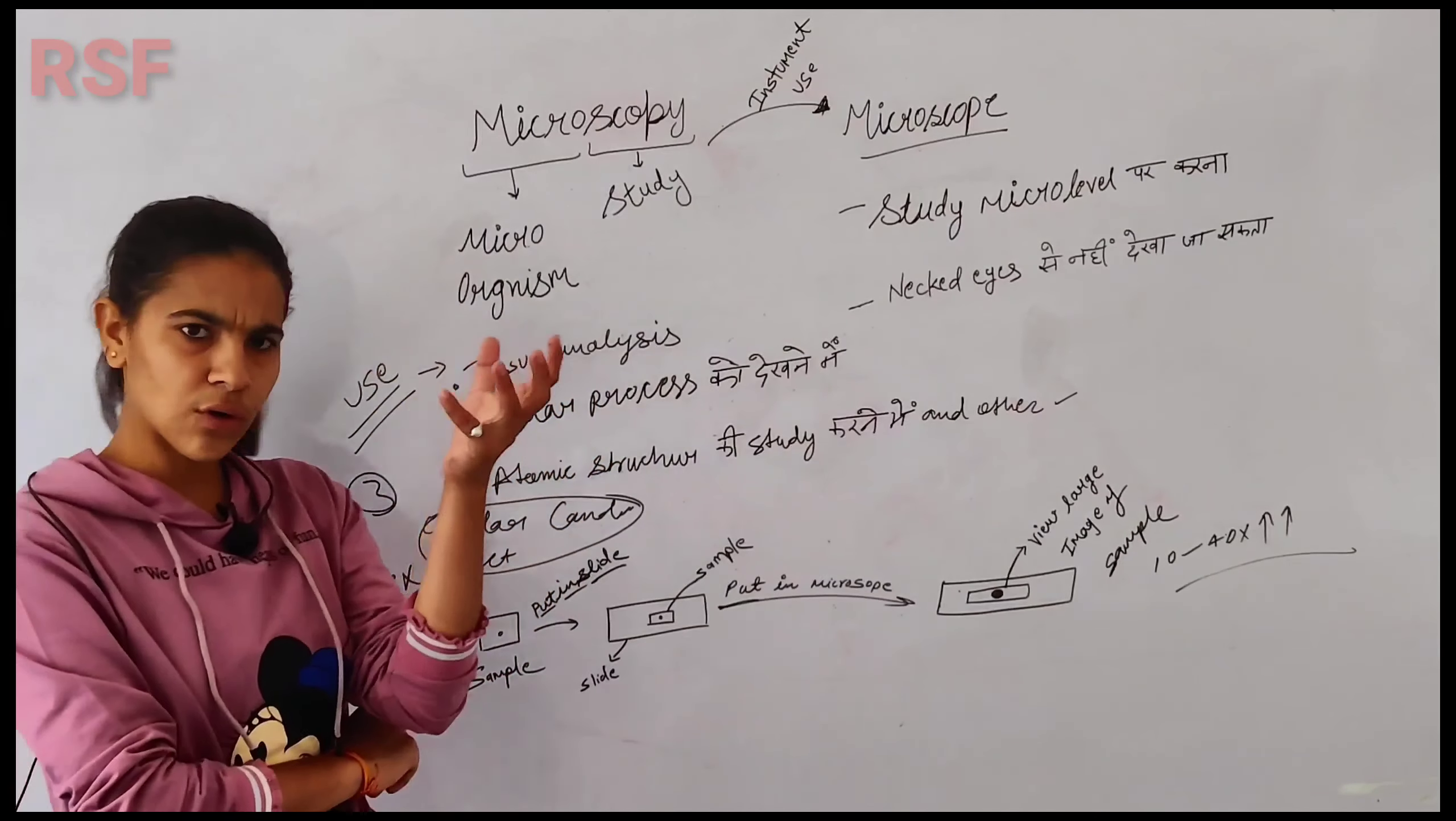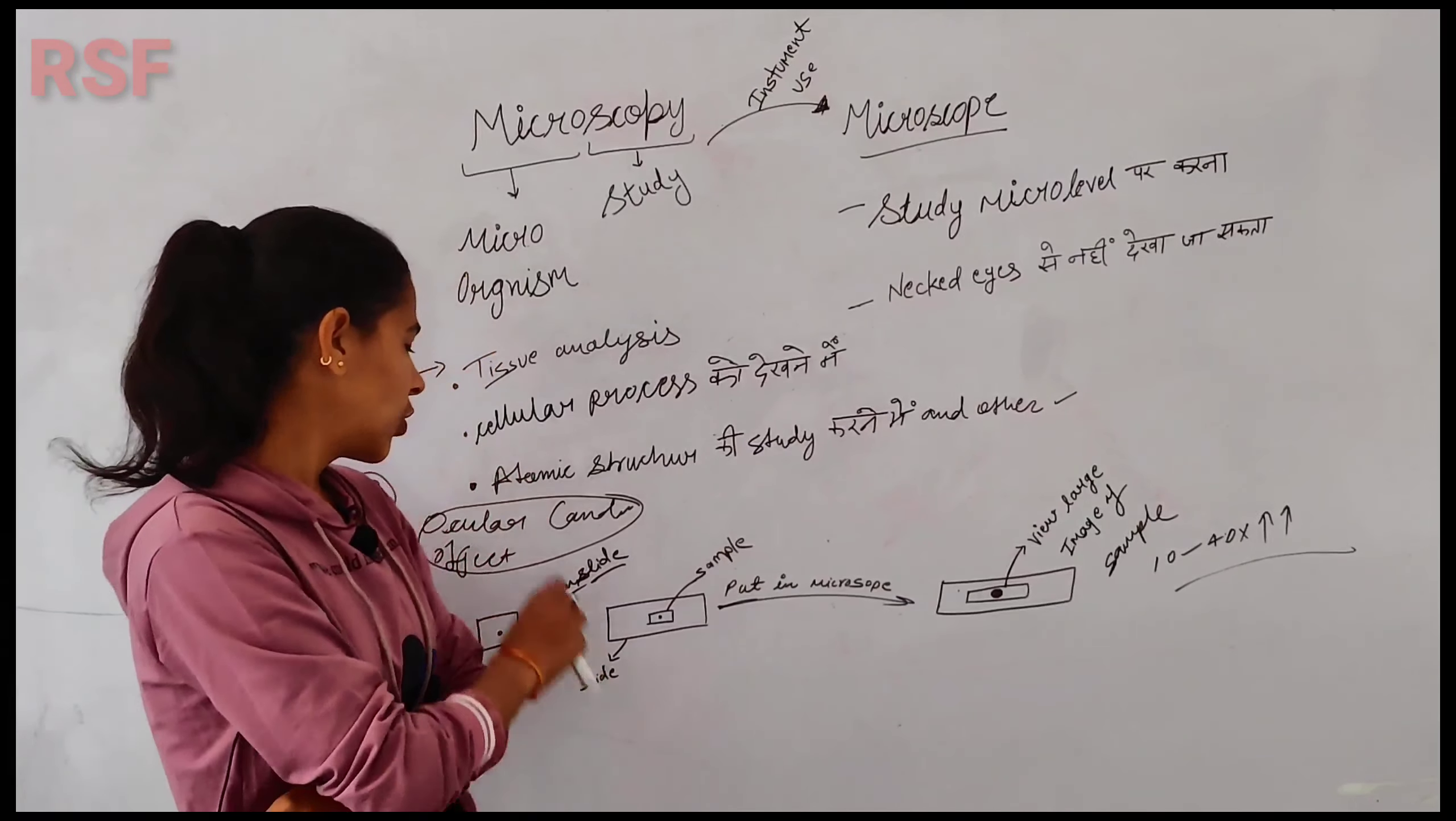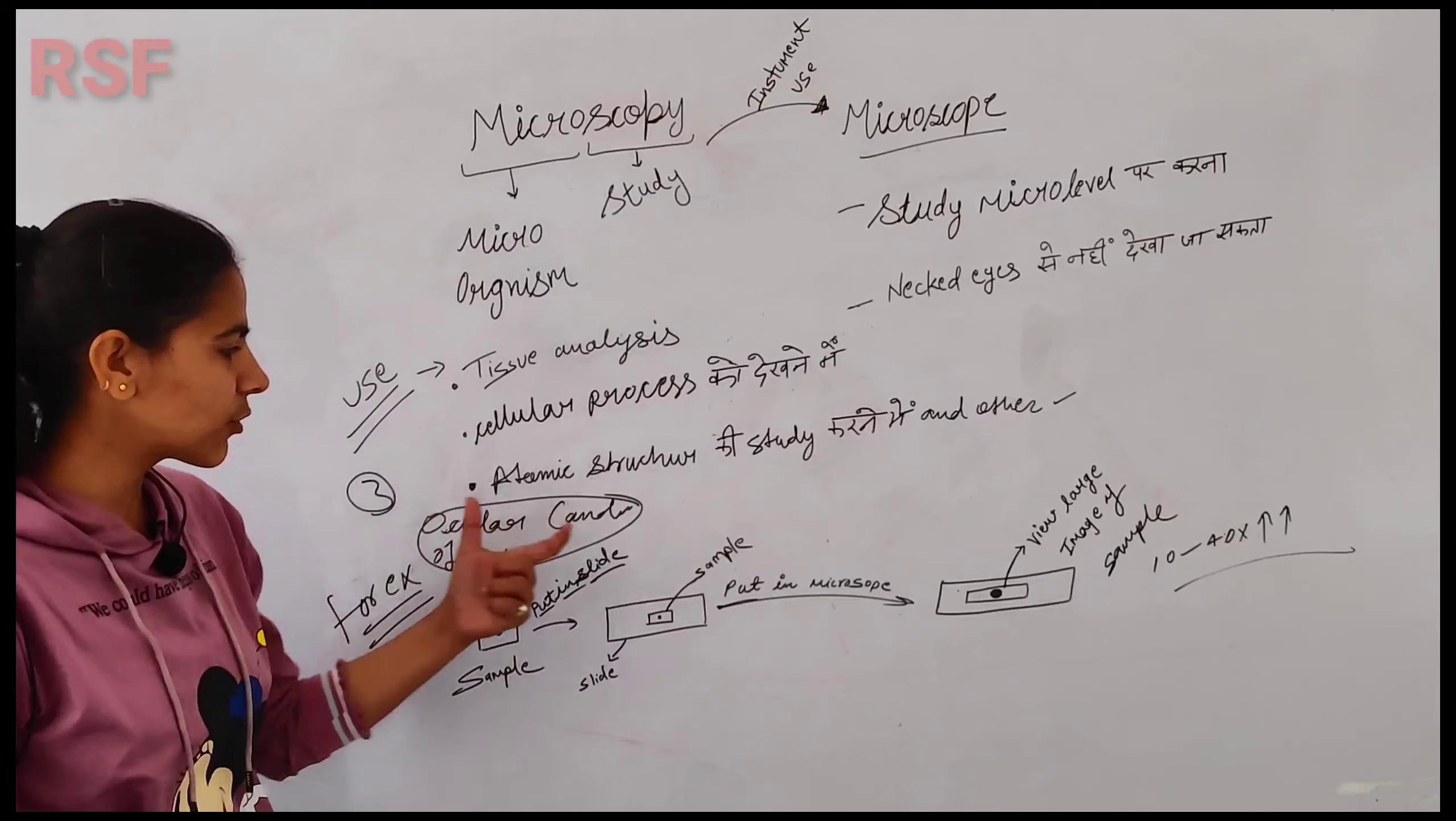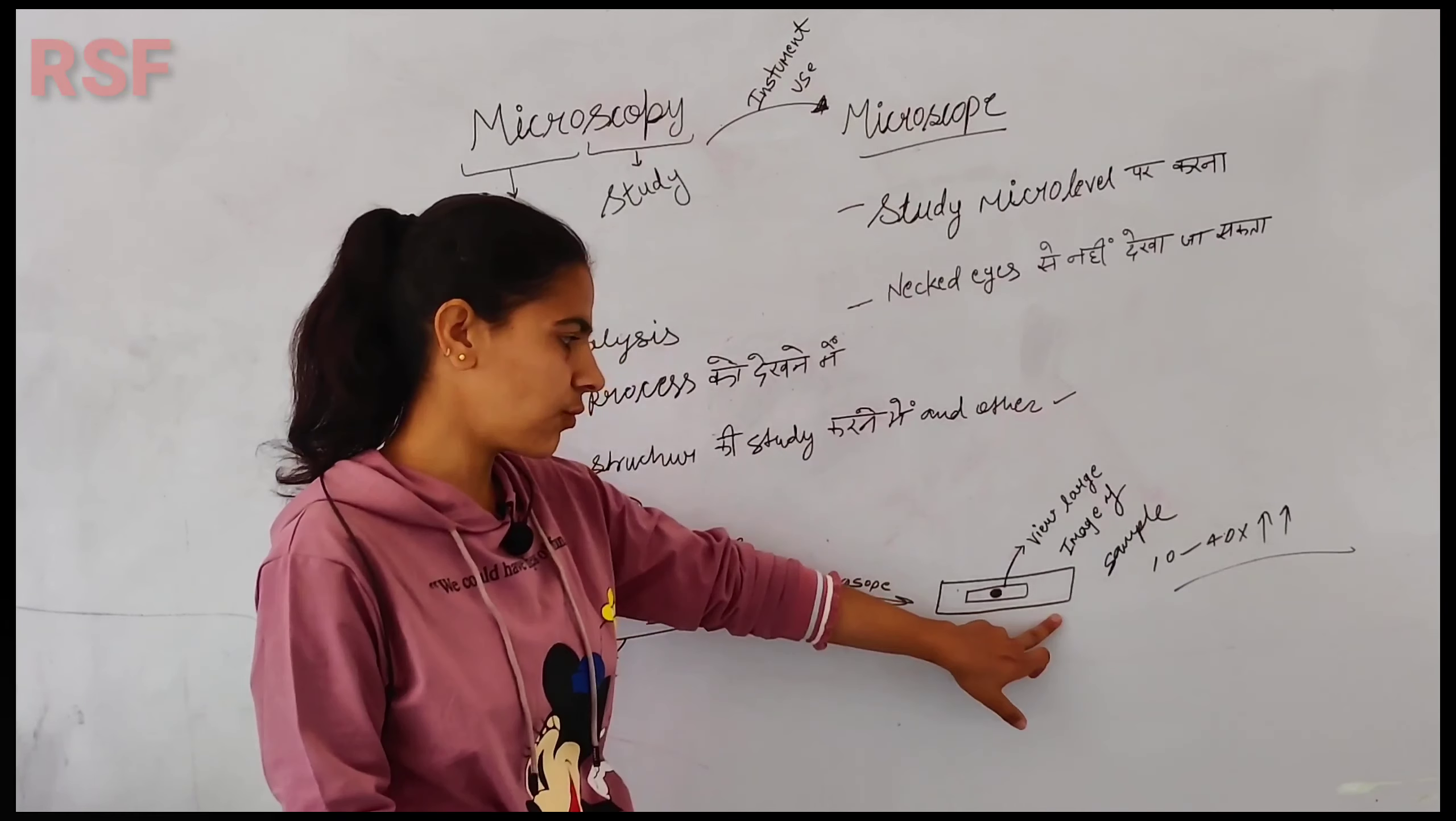The condenser lens condenses the light. Second is the objective lens, which helps with visualization. The objective lens provides the magnification power to make the image large.